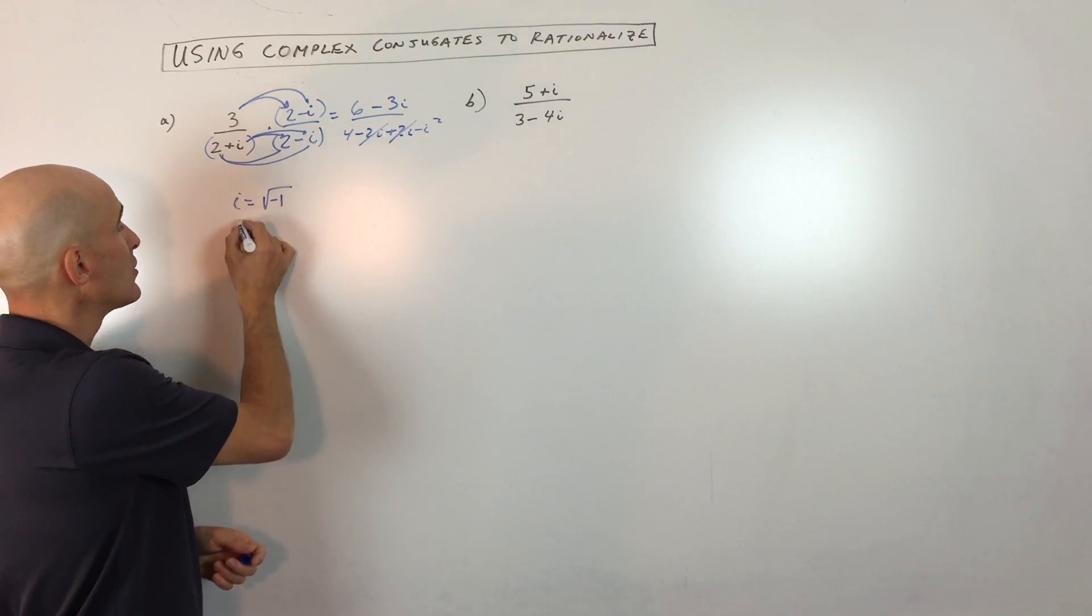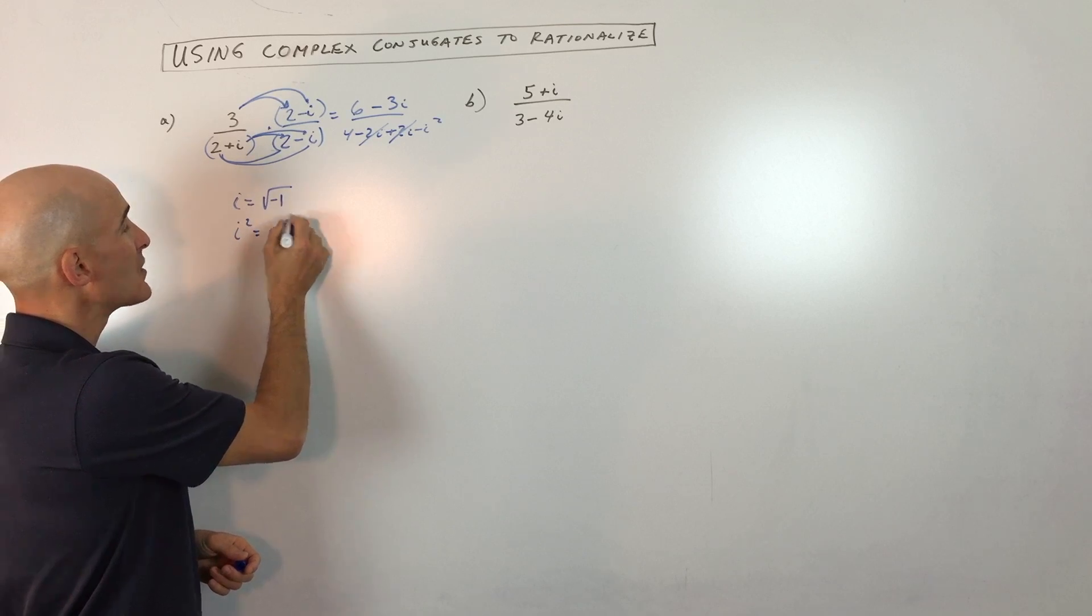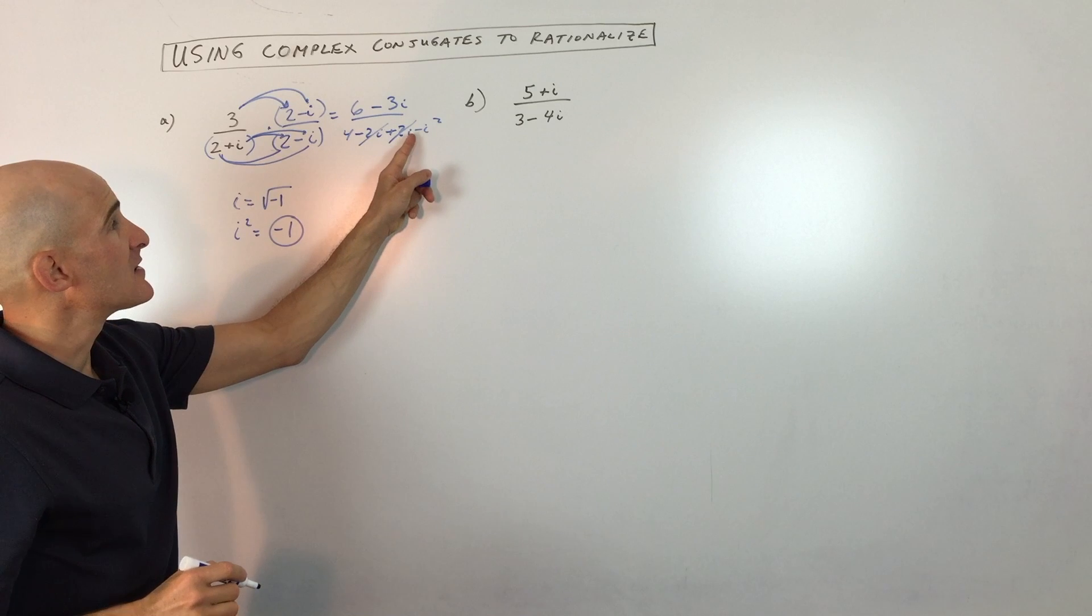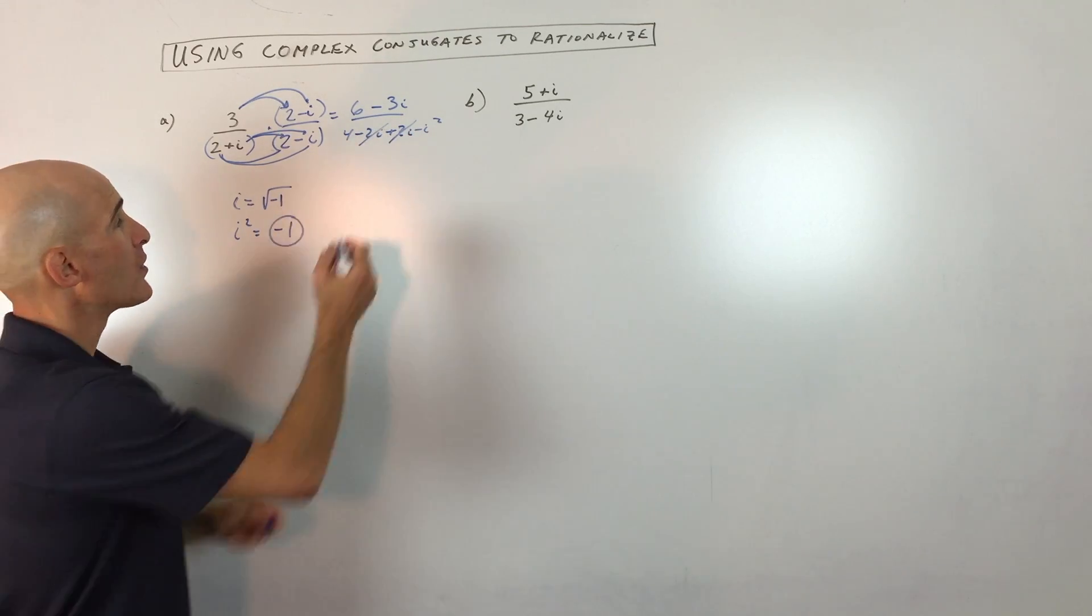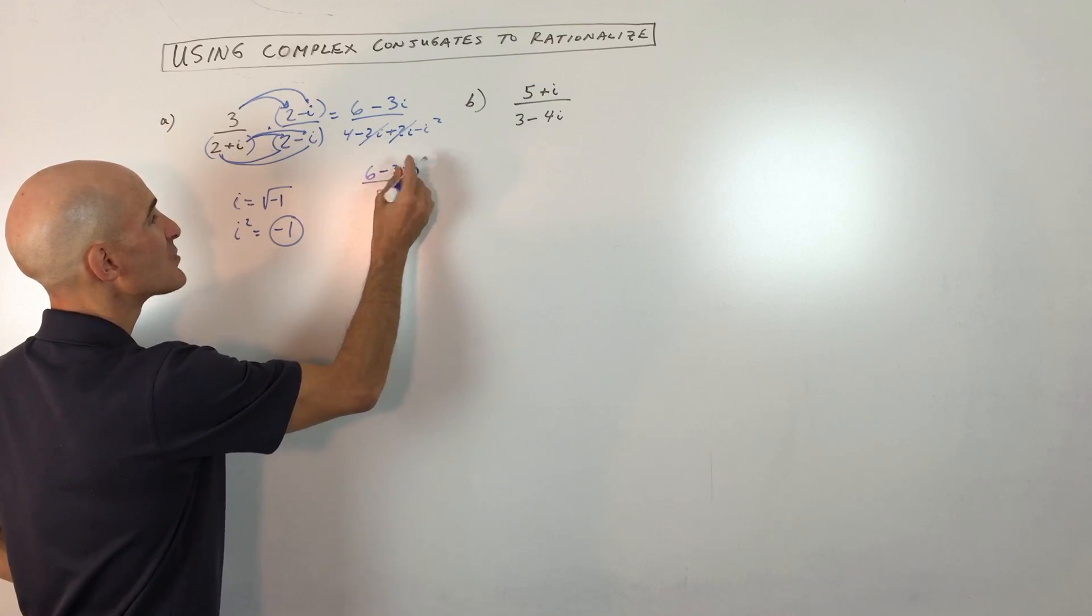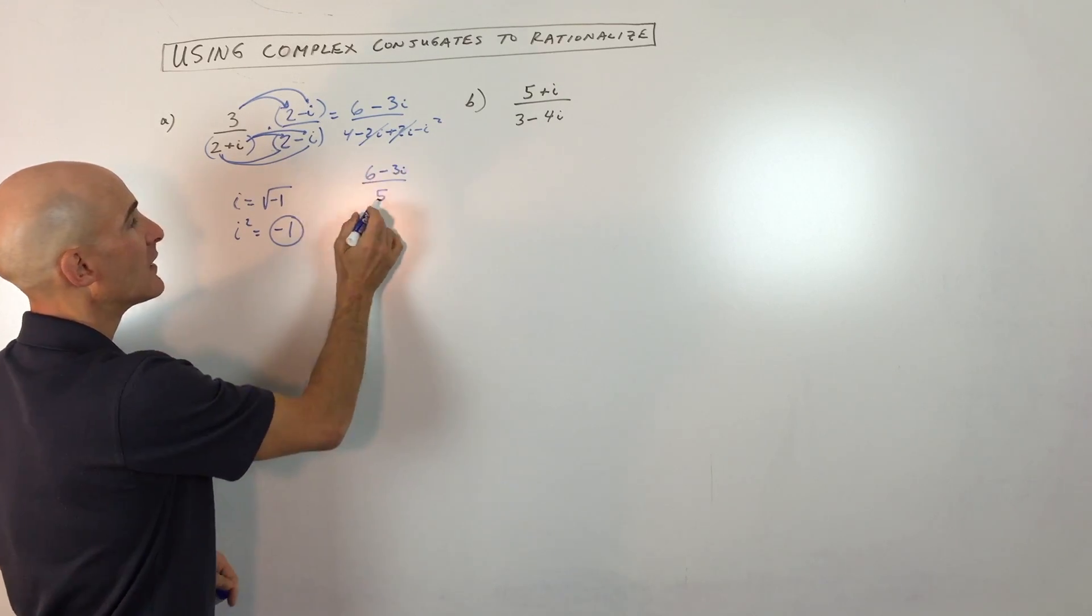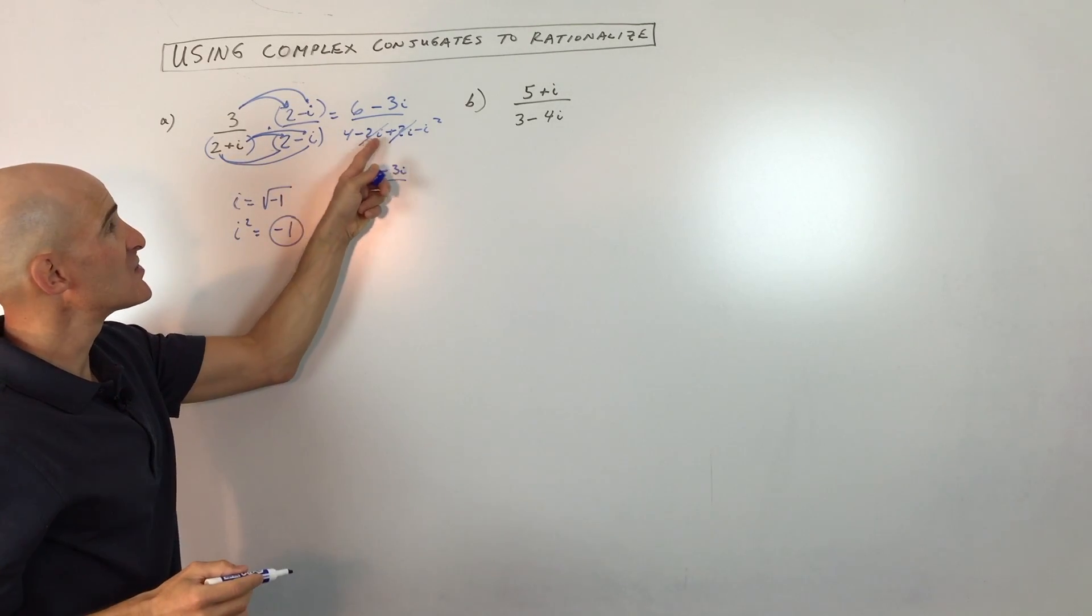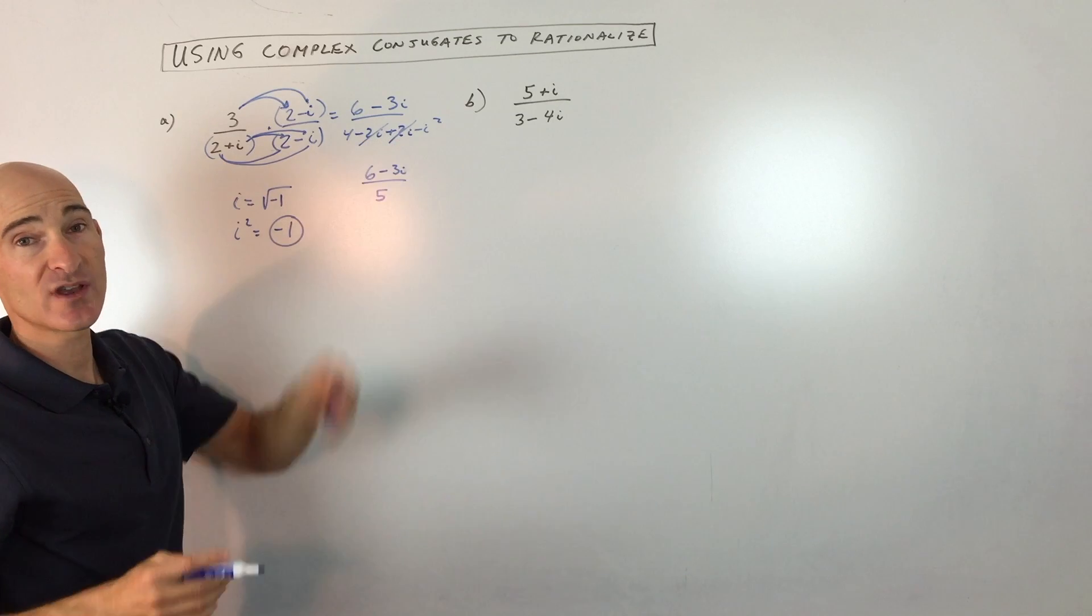Now i squared, you want to remember that i squared equals negative one. So a negative one times this negative would give you a positive one plus four is five. So the denominator becomes five. And you can see we've accomplished our goal of eliminating the i in the denominator. And the reason it works is because you see how these inside and outside terms are canceling one another out.